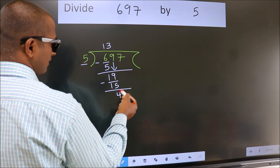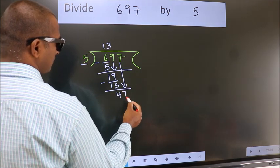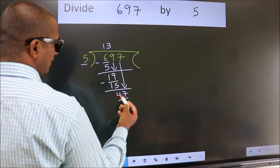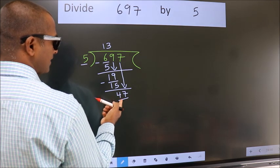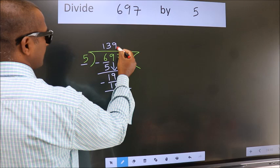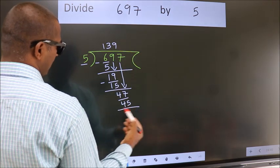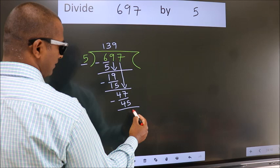After this, bring down the beside number. So 7 down, which gives us 47. A number close to 47 in the 5 table is 5 nine times, which is 45. Now we subtract. We get 2.